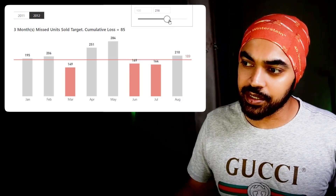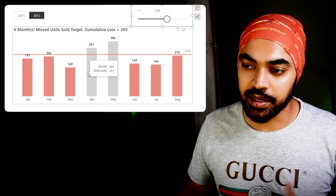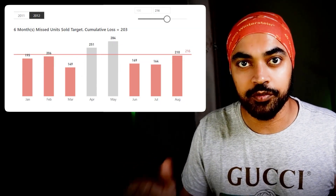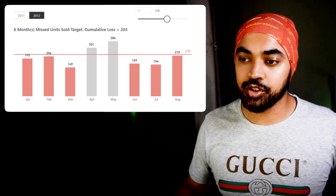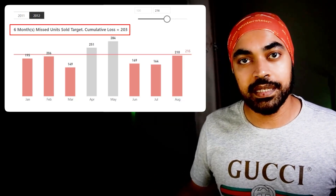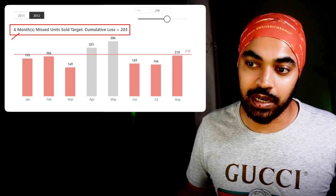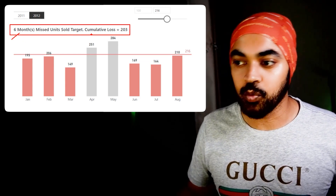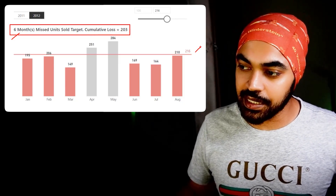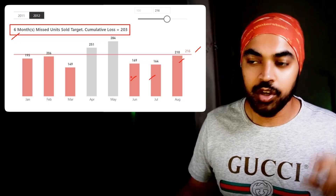If I increase the target, you can see that all the months that do not meet the target get highlighted, and we need to learn how to do that — which is through conditional formatting. The last part is the title, which is also interactive. Depending on the status of the chart, it picks up how many months have missed the target and tells you the cumulative loss as compared to the target.